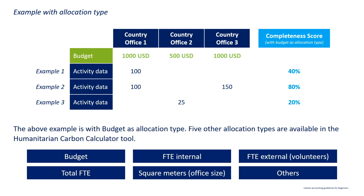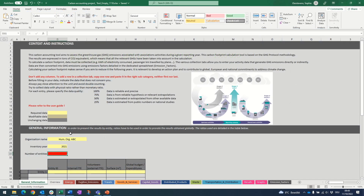In these examples, the allocation type was budget, meaning budget was used to reflect the size of each entity and compute the completeness score. But you can set the allocation type to a few other figures: the number of internal FTEs (employees per entity), the number of external FTEs (volunteers per entity), the total number of FTEs including both employees and volunteers, the number of square meters of office size per entity, or you can define another figure relevant to your organization — a custom allocation type.